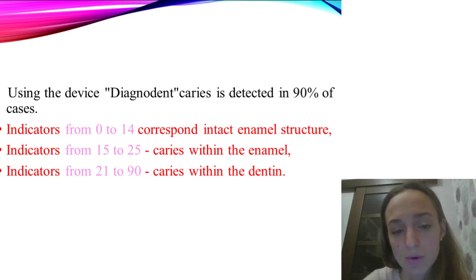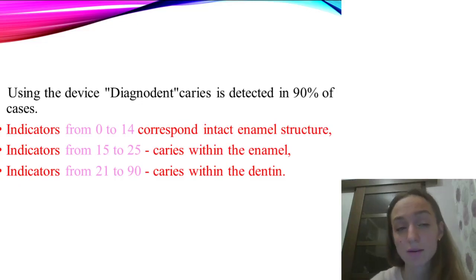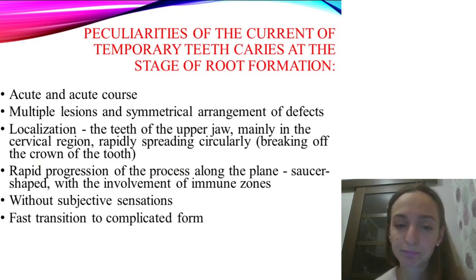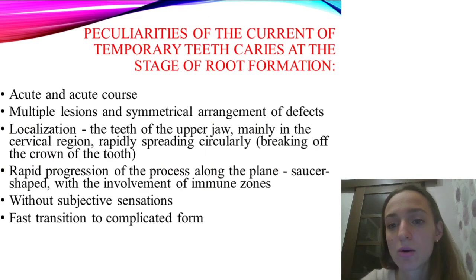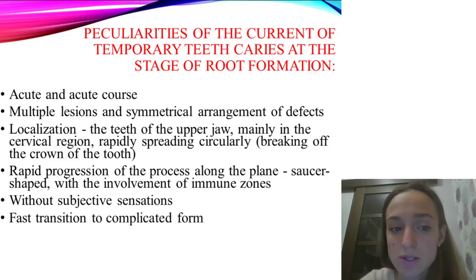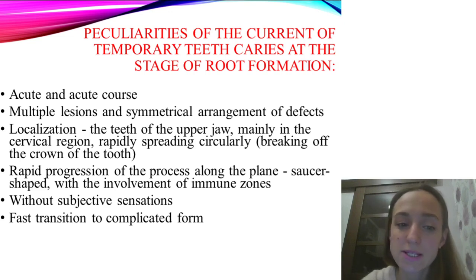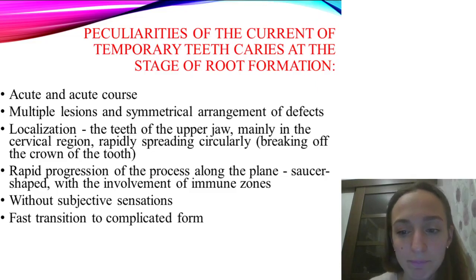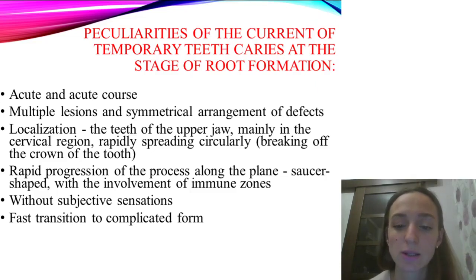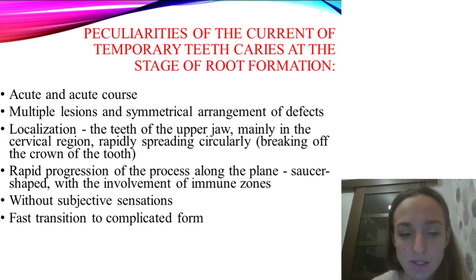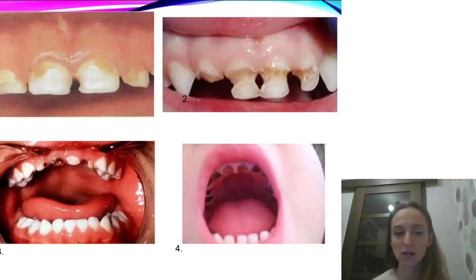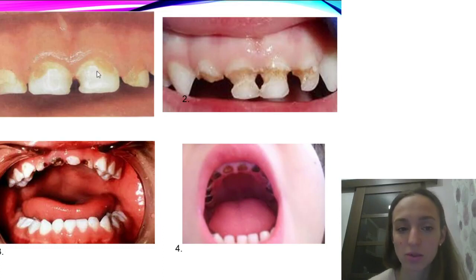Device readings: 0–14 indicates intact enamel structure, 15–25 indicates caries within enamel, and 21–90 indicates caries within dentine. Peculiarities of temporary caries at the stage of root formation include: acute and rapid course, multiple lesions, symmetrical arrangement of defects, localization mainly in the cervical region of upper jaw teeth, rapid progression along the plane of the upper jaw in a circular shape with movement of the immune zone, no subjective sensation, and fast transition to complicated forms.